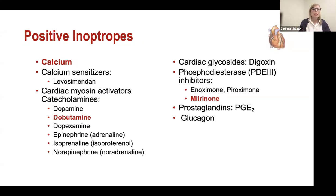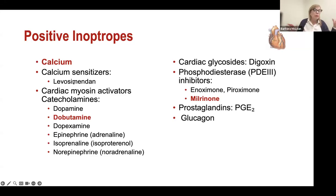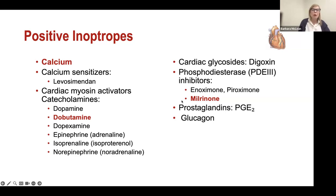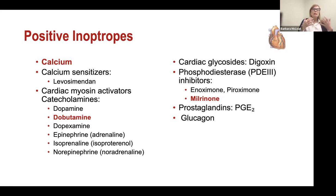For positive inotropes, really there are just three I'm looking at: calcium — which we really have to consider first — calcium sensitizers which are making big waves and are currently under FDA review, dobutamine as what we use most significantly, secondarily epinephrine, and the phosphodiesterase inhibitor milrinone. Dobutamine and epinephrine are catecholamines; calcium is an electrolyte and ultimately an ion. The phosphodiesterase inhibitor makes more calcium available.